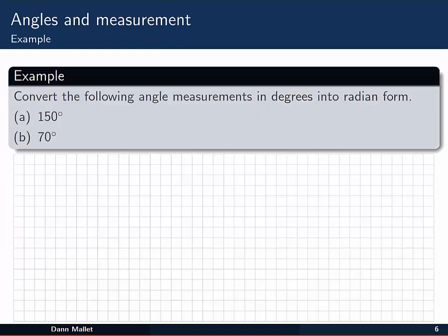Here's a couple of examples. We want to convert the following angle measurements in degrees into radian form. Give yourself a couple of moments now to try these out using the formulae from the previous slide.